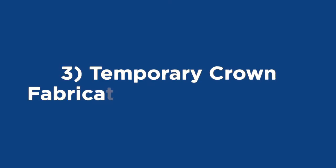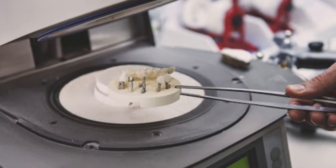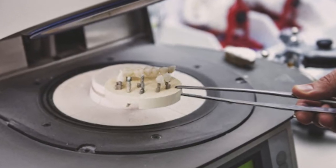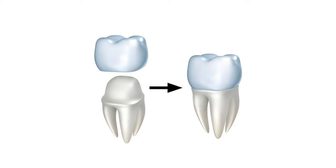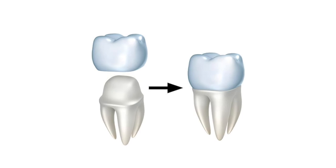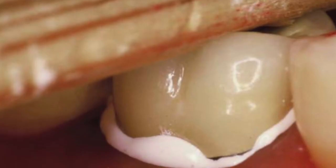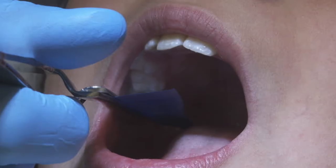Third, temporary crown fabrication and placement. This step can sometimes be skipped if the crown is made the same day. Fourth, cementation of the permanent crown — the permanent crown is cemented in place using a permanent adhesive. The bite is checked and adjusted as needed.